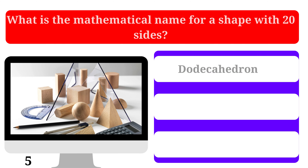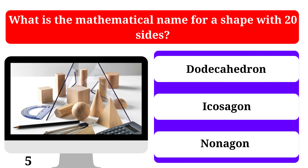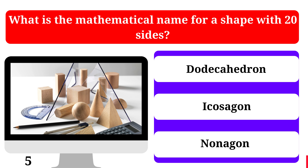What is the mathematical name for a shape with 20 sides? Dodecahedron, Icosagon, or Nonagon. The correct answer is Icosagon.